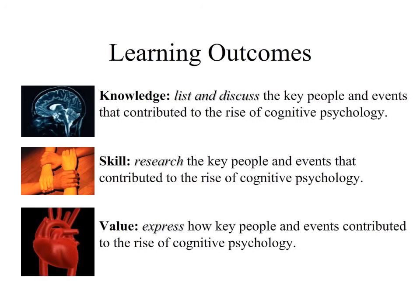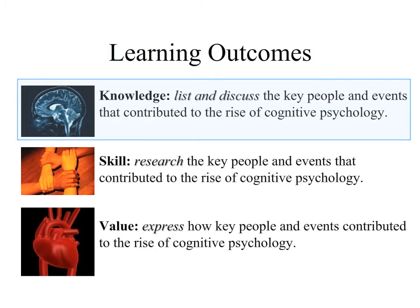Before we begin, let's outline the three learning outcomes for this module. In terms of knowledge, we want you to be able to list and discuss the key people and events that contributed to the rise of cognitive psychology.